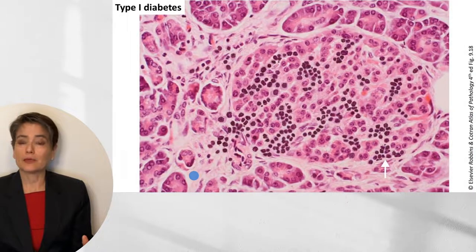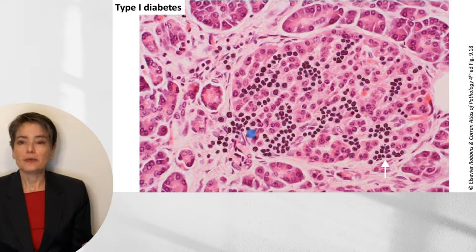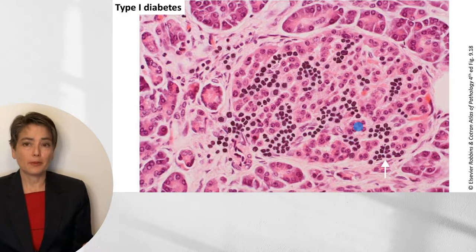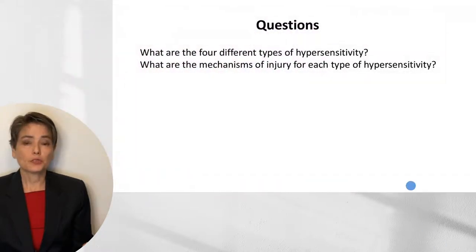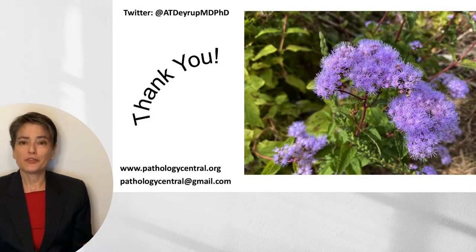Regarding CD8-positive T-cells in type 4 hypersensitivity: here is an incredible image showing an islet of Langerhans in the pancreas being infiltrated by CD8-positive T-cells that will kill these cells, and eventually this patient will develop type 1 diabetes. Here are some questions for you to review the material you've just seen. Thank you very much for your time and attention. I hope you have found this useful.